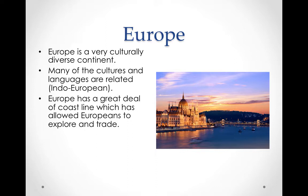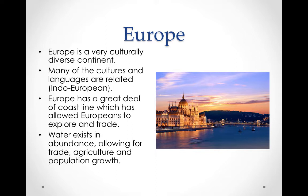Europe has a great deal of coastline, which has allowed Europeans to explore and trade — it is not landlocked like some places are. Water exists in abundance, allowing for trade, agriculture, and population growth. To the right, you see the Danube. There are many river systems moving through Europe, which allows for population exchanges.